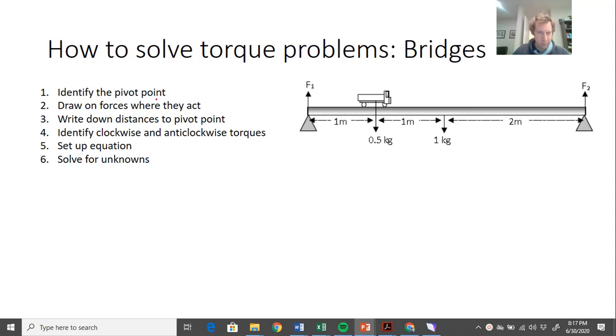The first one is identify the pivot point. Now this is a big step. With the seesaw example, the pivot point was pretty obvious. It was in the middle where it pivoted. Here we've got two things, and we can choose any one of these to be our pivot point for our calculations.